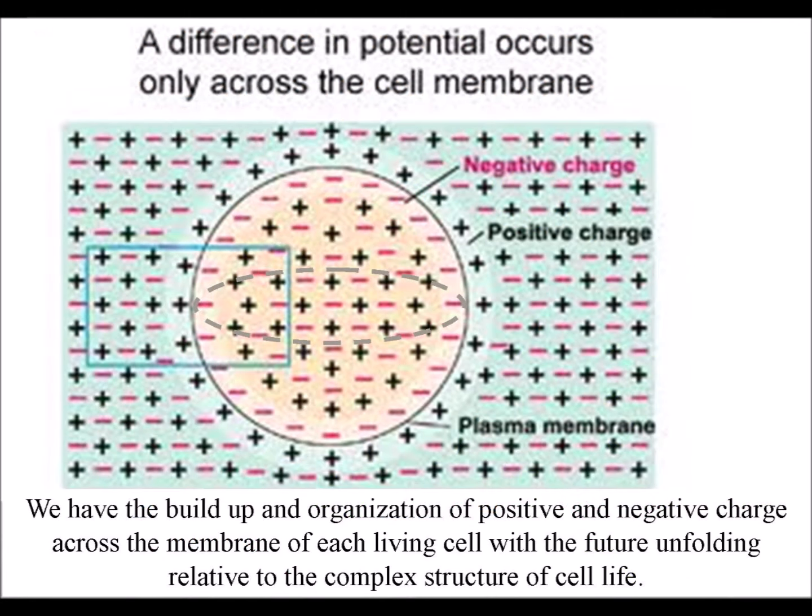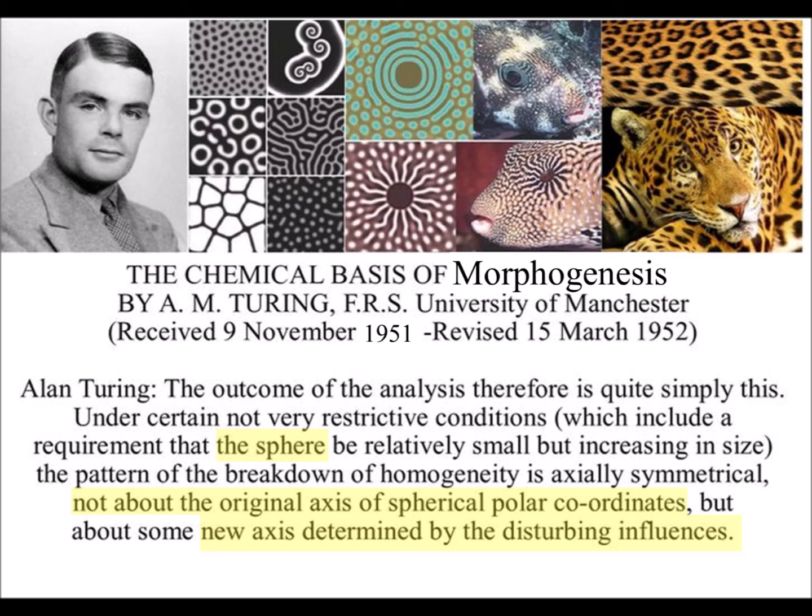This dynamic geometry could explain why life has a mathematical base. Also, a process based on symmetry forming and breaking could explain why cell life is never perfect mathematically or geometrically.